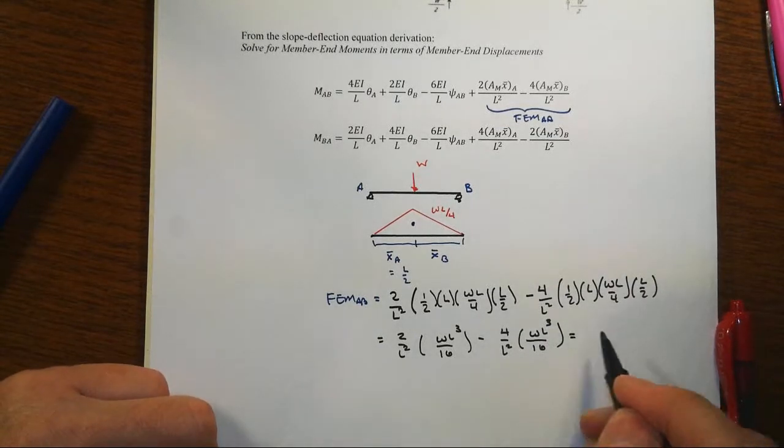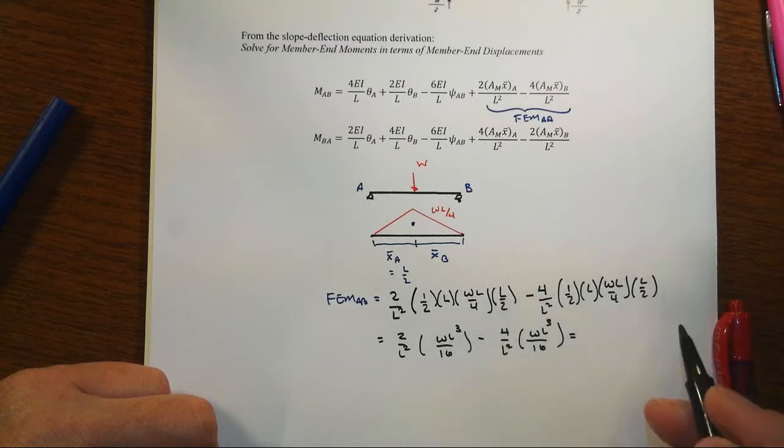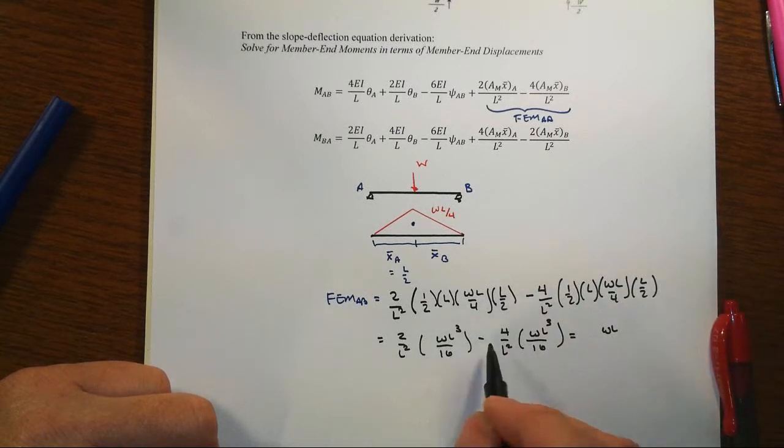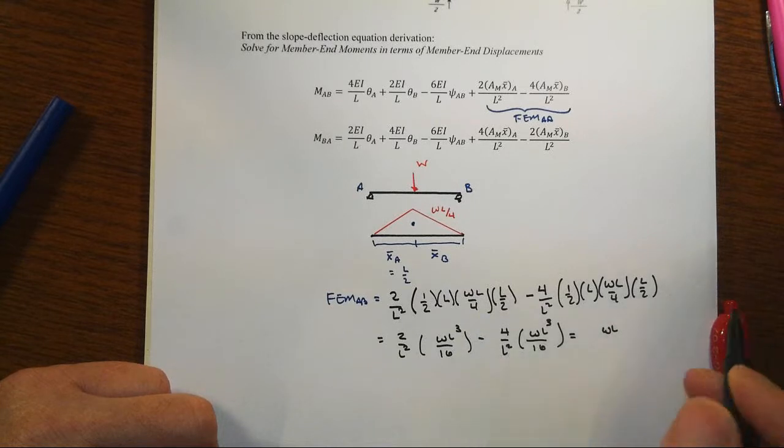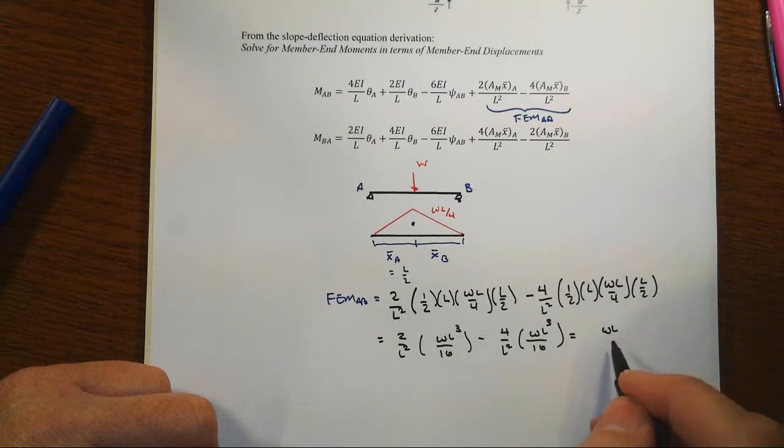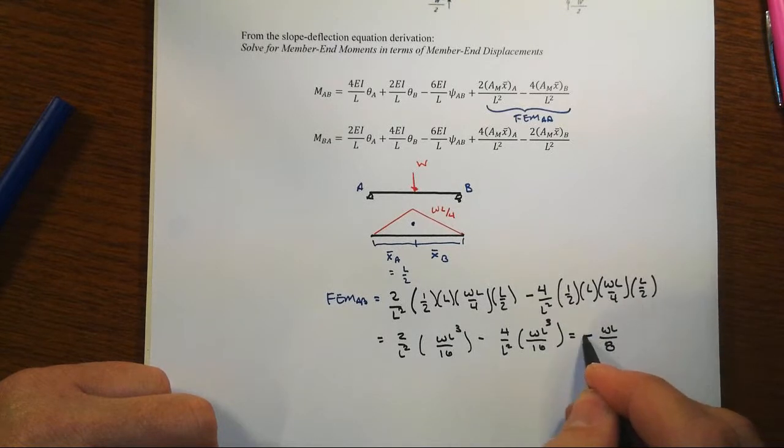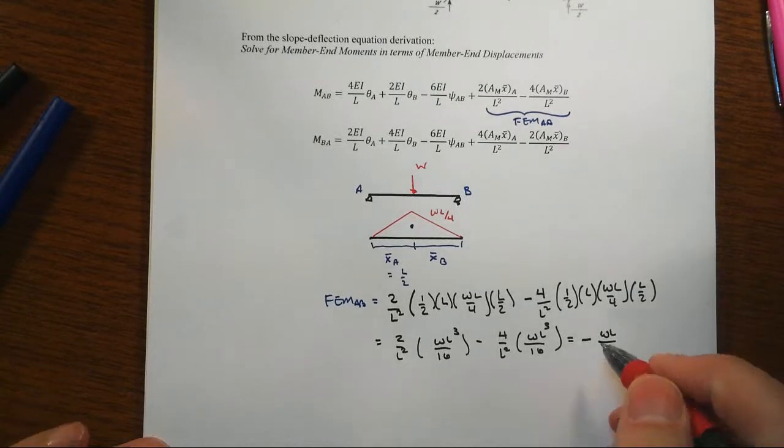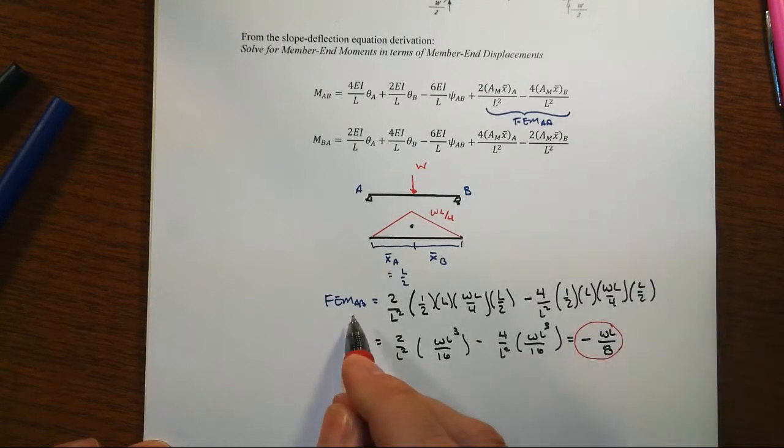When you work out the math there, L cubed over L squared is just L, that's WL, and we get 2 over 16 minus 4 over 16, or in other words 2 over 16, i.e., WL over 8. But the last term will dominate, so we have minus WL over 8 as our fixed end moment for AB, which is on the left side.